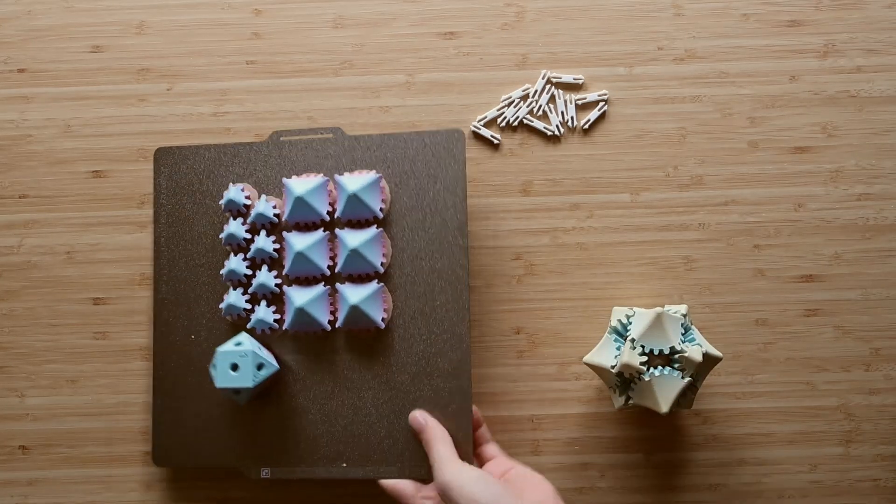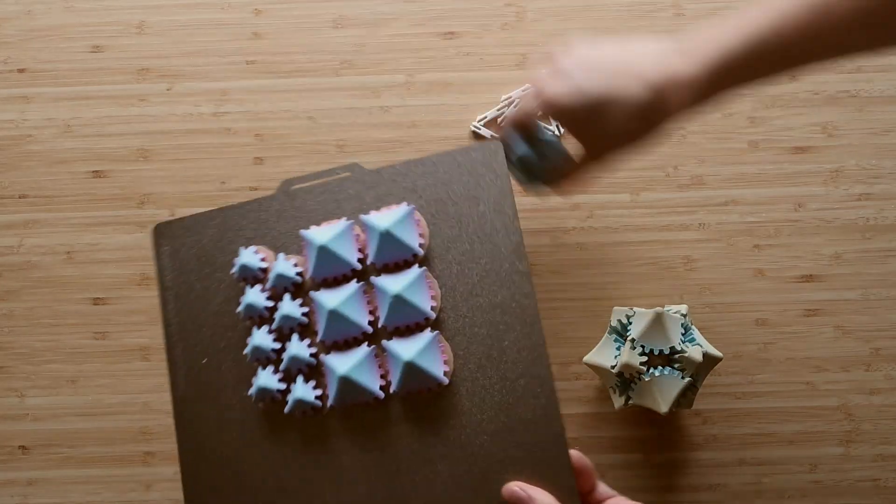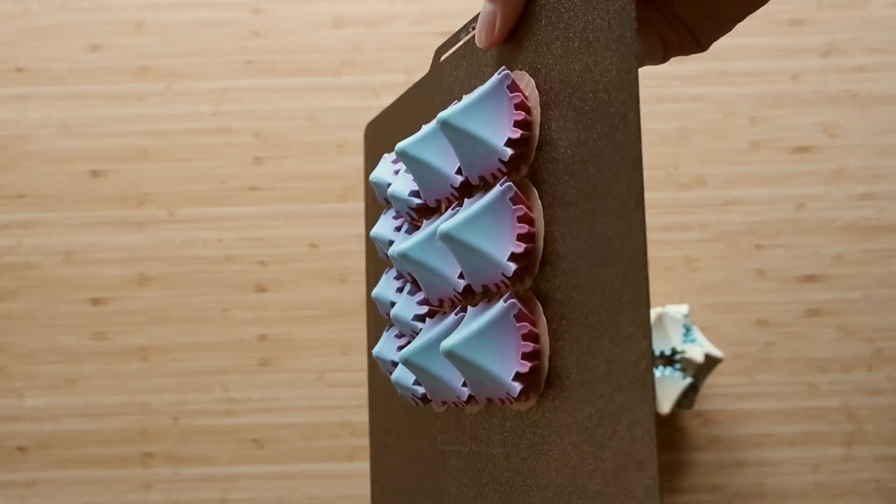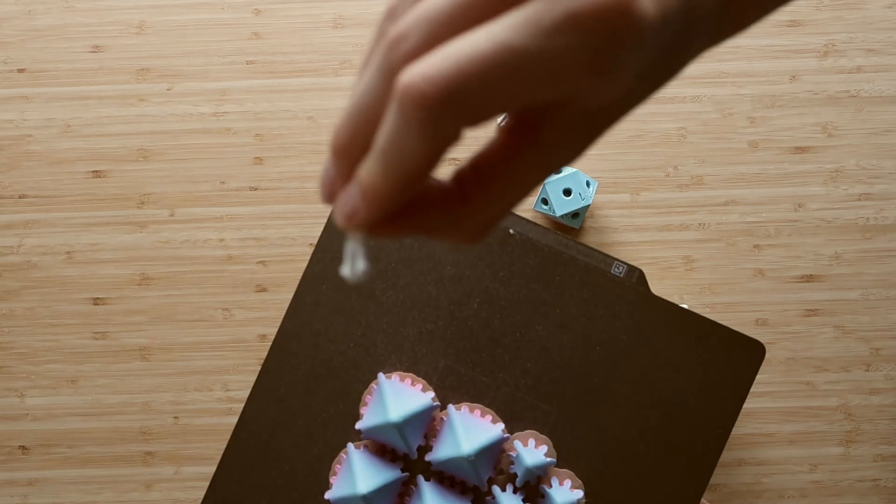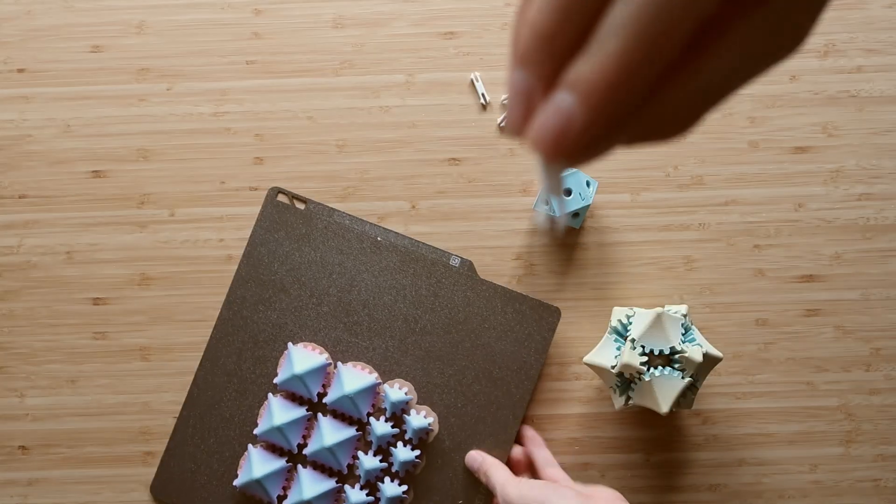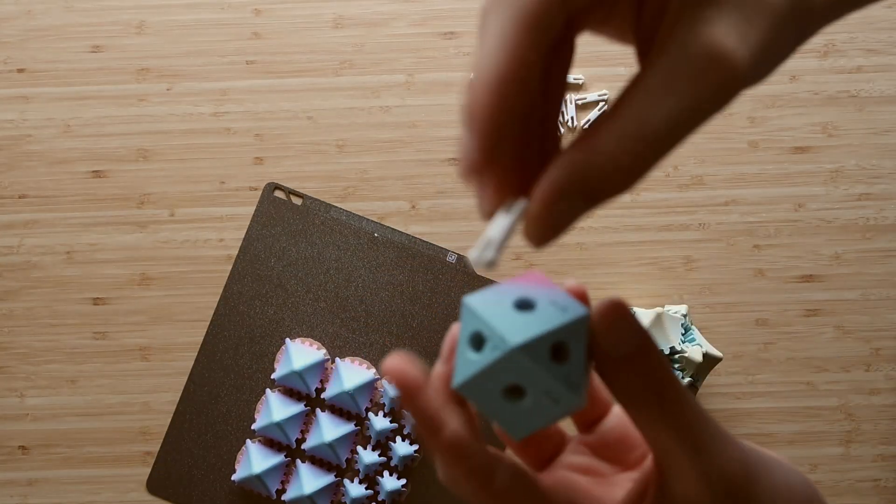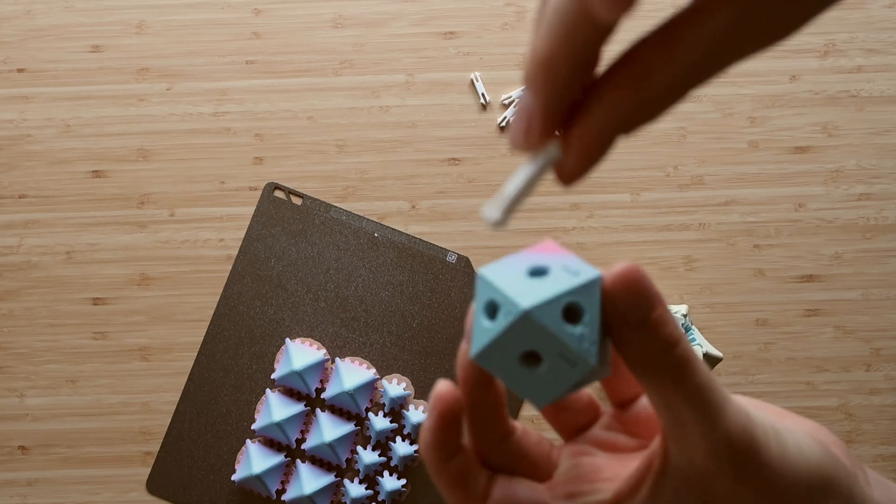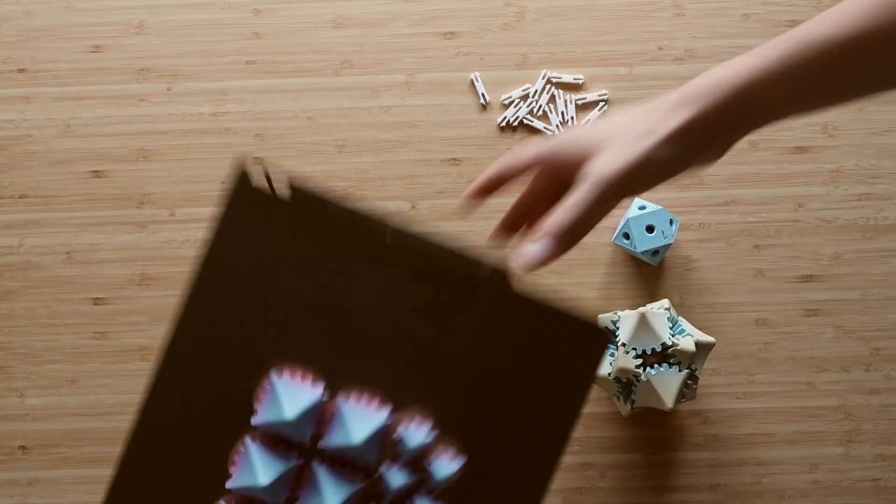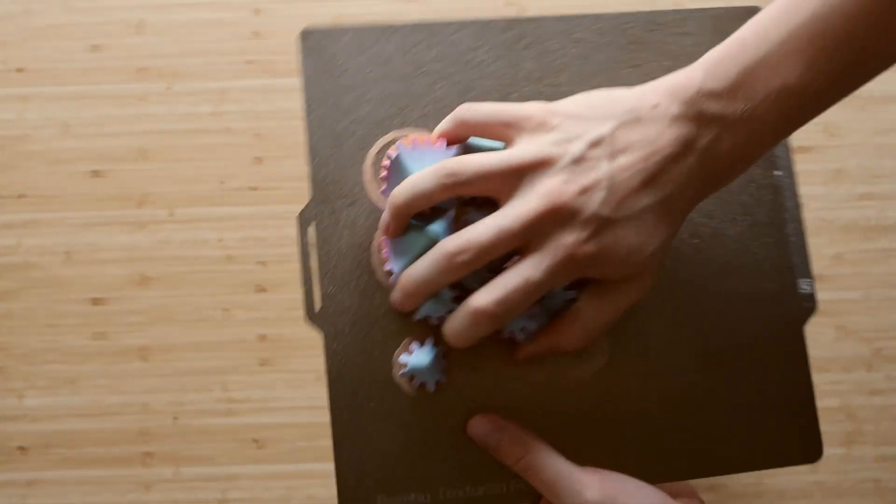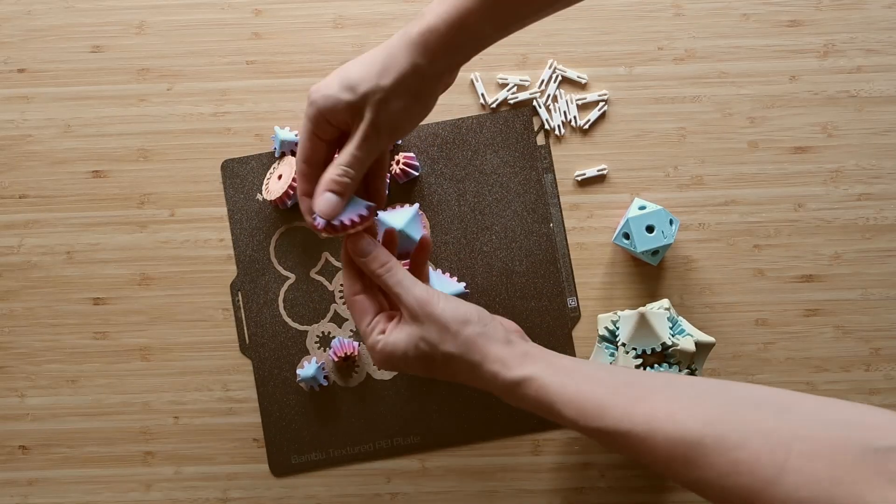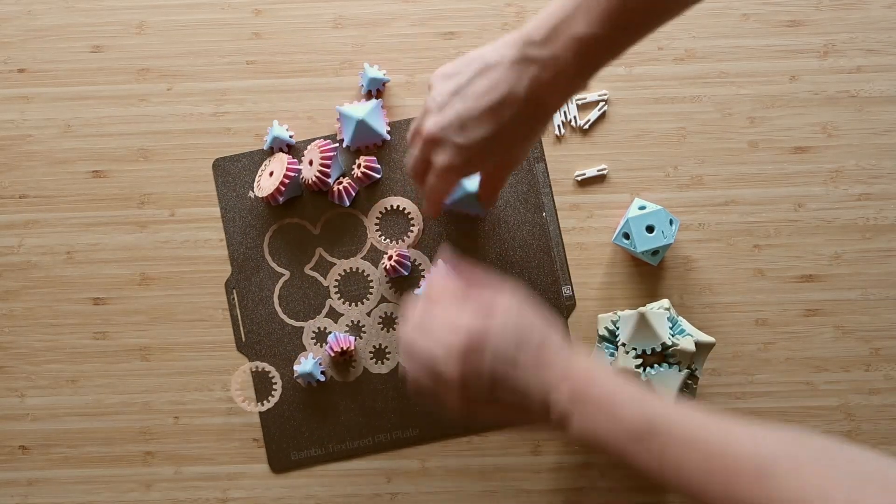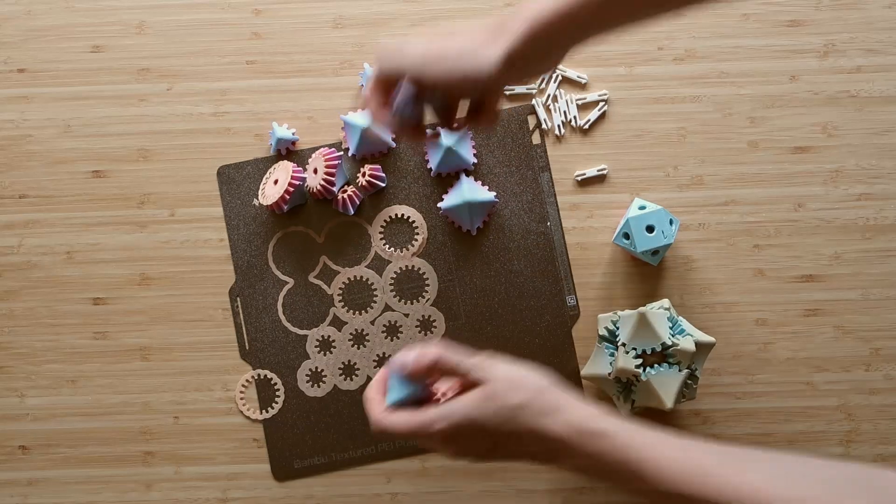I already printed everything out. As you can see, I used the brim for the gears and the connectors, and the heart didn't need any adhesion. So first step, print everything out. If you're lucky, the brim disconnects that easy.